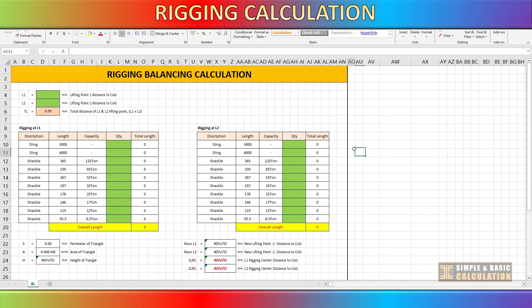Now, let us utilize the mathematical approach. I created this spreadsheet for the purpose of rigging balancing. This spreadsheet provides information on the degree of tilt that the cargo will experience if the rigging and center of gravity are misaligned.